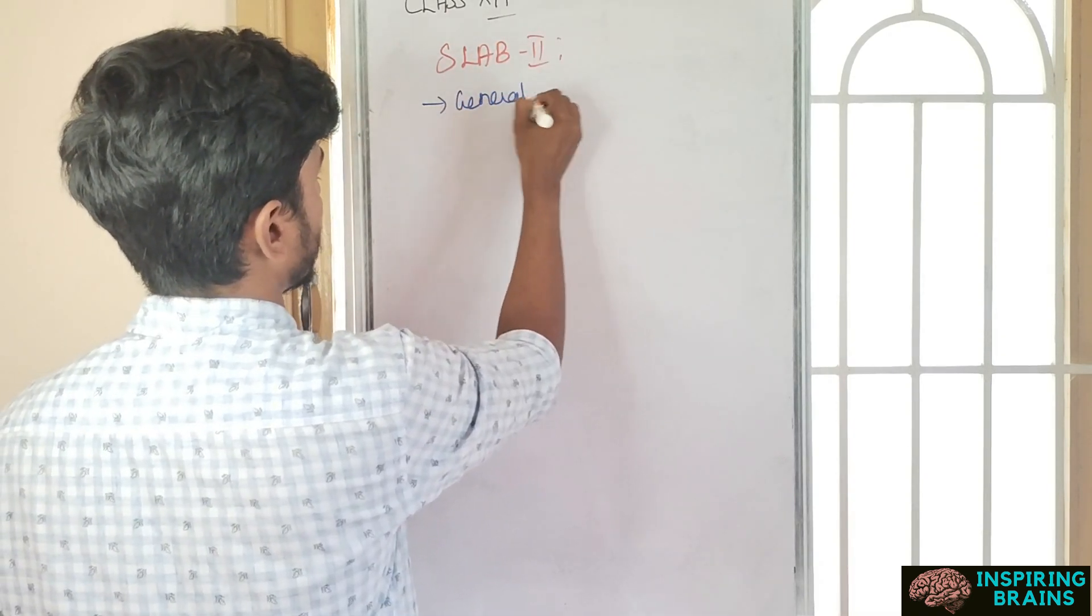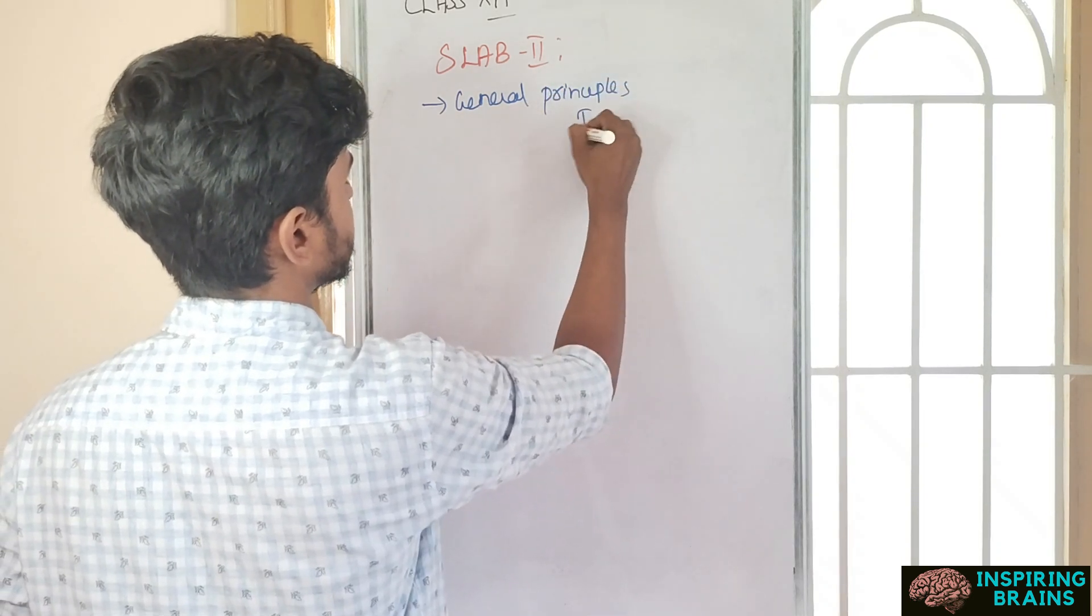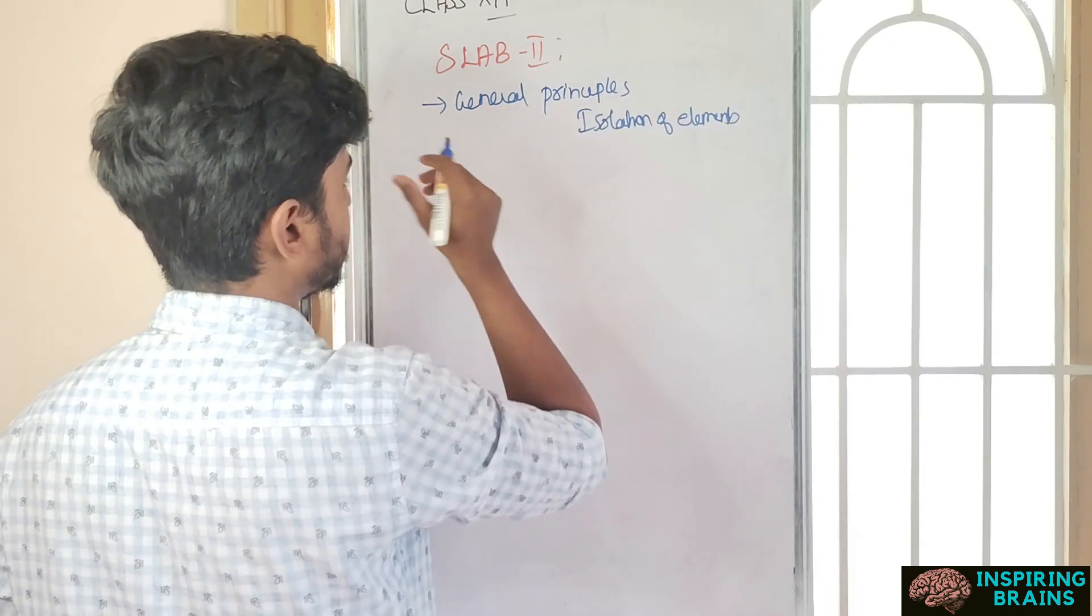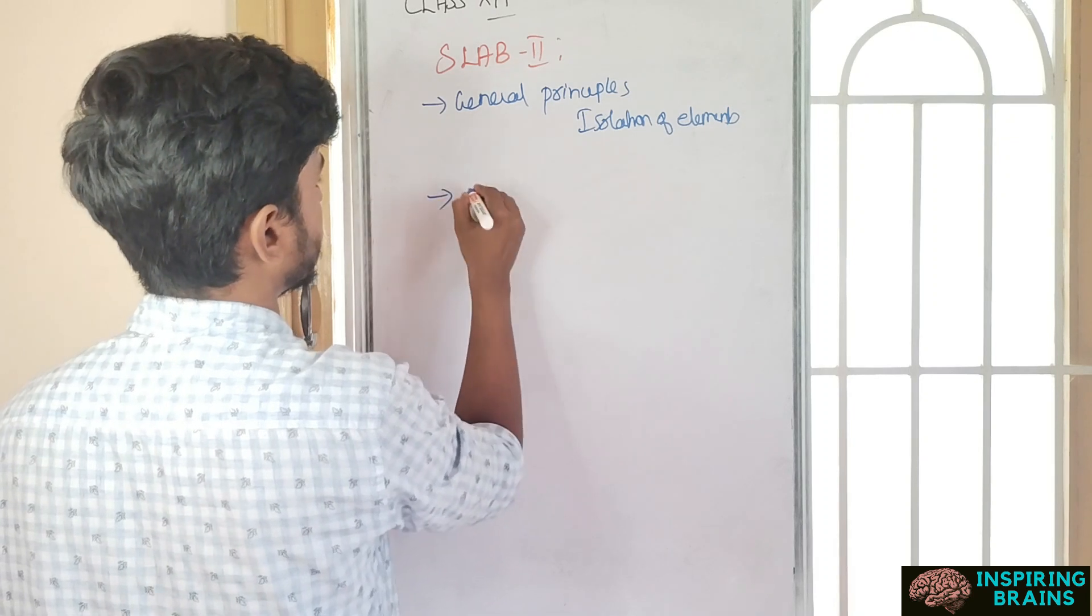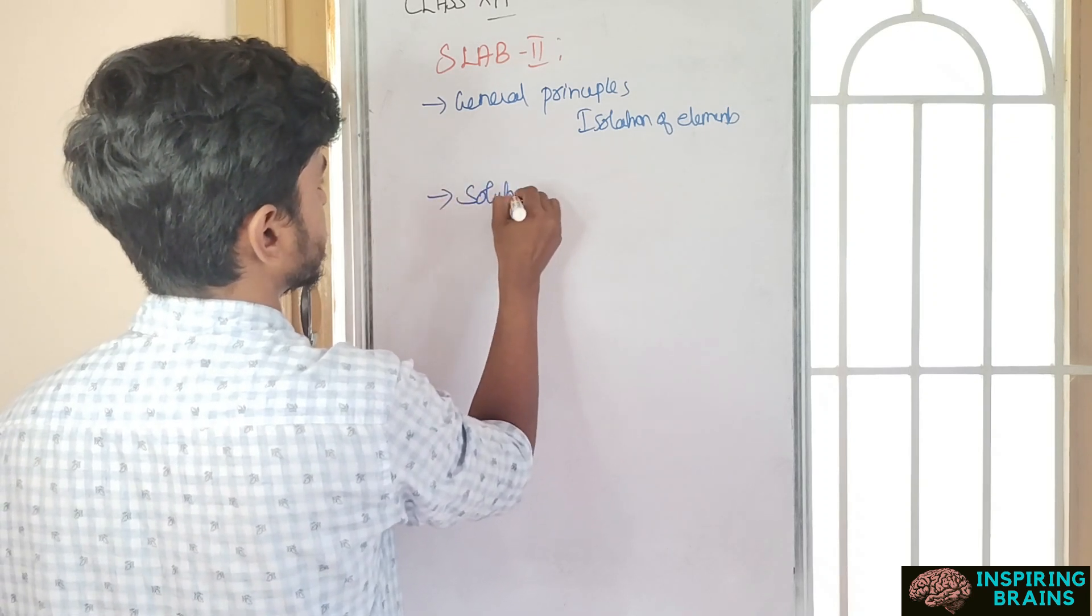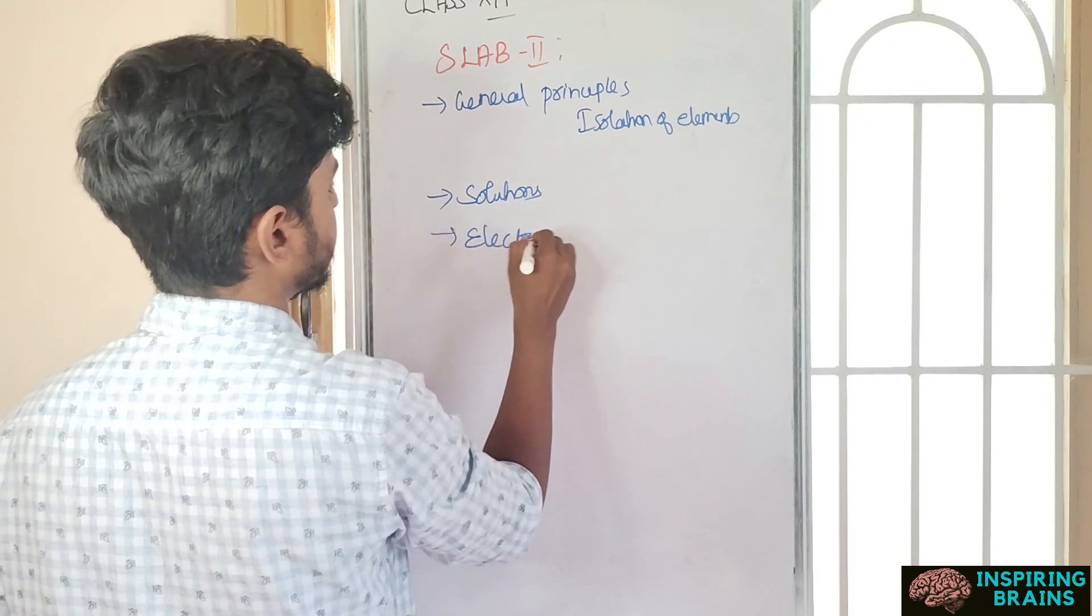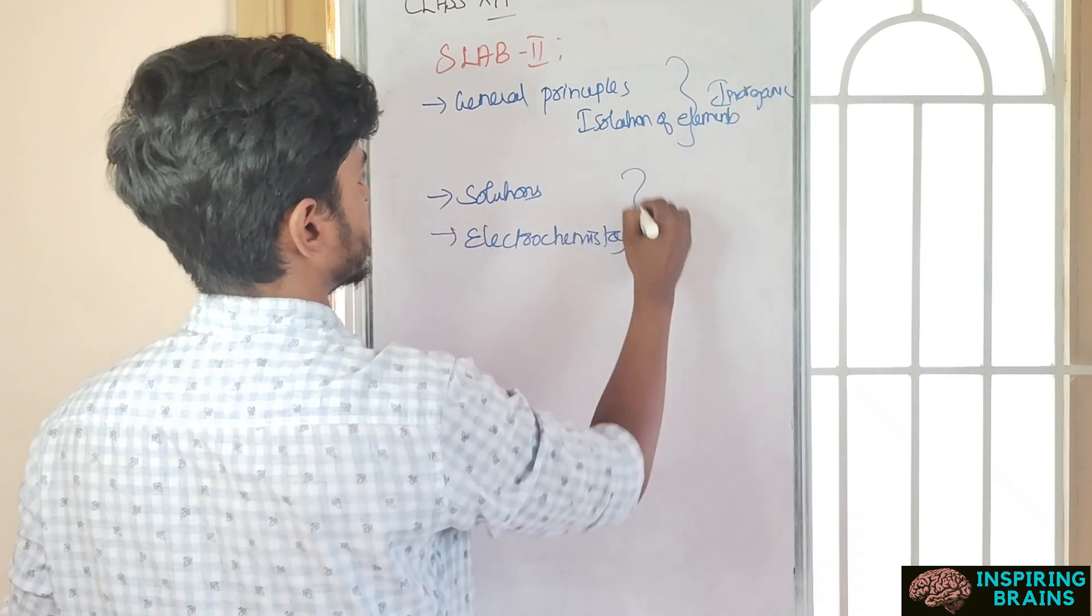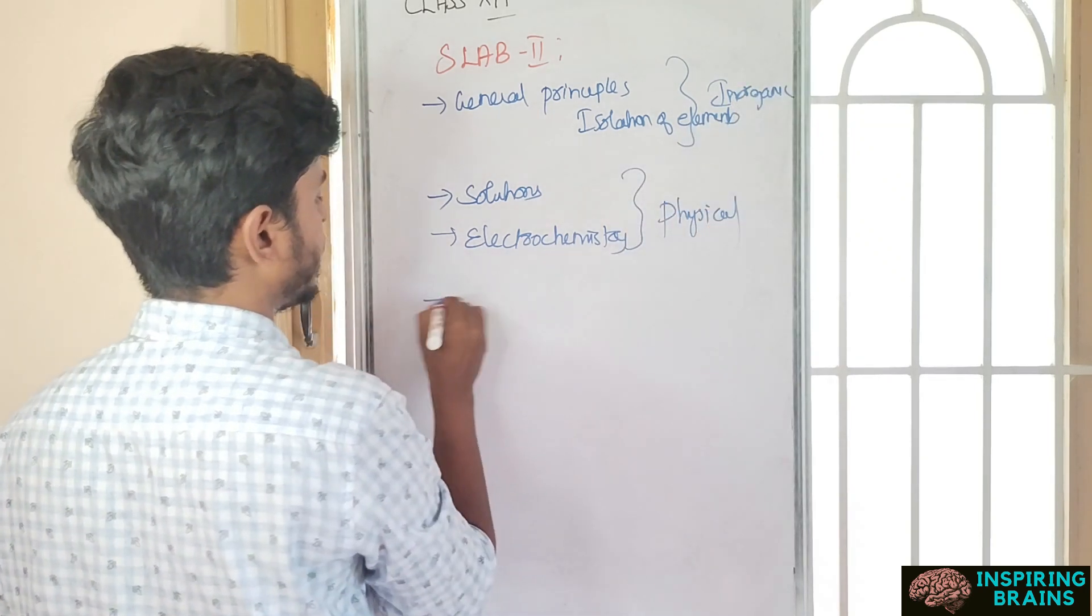Slab 2 chapters: general principles and process of isolation of elements, ores and isolation. If you don't study P block, at least put in slab 2. Once you're done with this, then you can go with solutions, then electrochemistry.